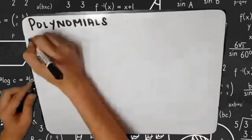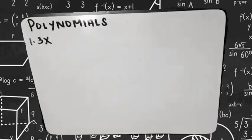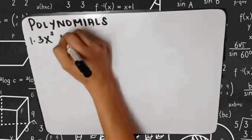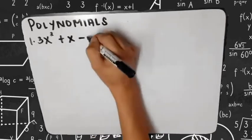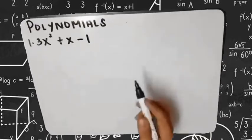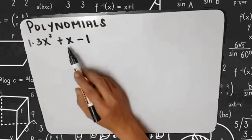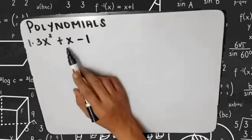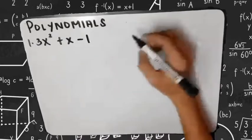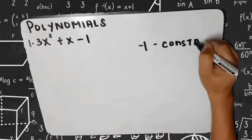Let's have an example. Identify if the given expression is an example of a polynomial or not. For example number 1, we have 3x squared plus x minus 1. How many terms do we have? We have 3: the first term is 3x squared, the second or middle term is x, and the third term is negative 1. The term with no variable — in this case, minus 1 — is called the constant term.